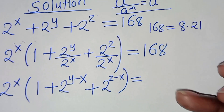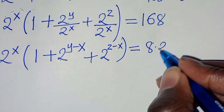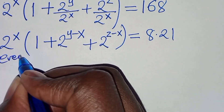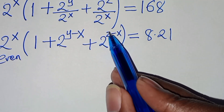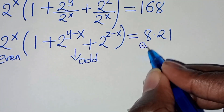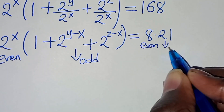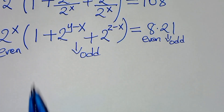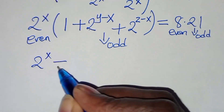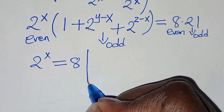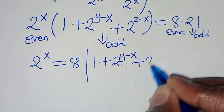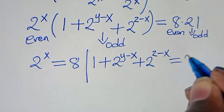So here we have 8 times 21. Now let's make a comparison. On the left-hand side, 2 to the power of x is even, and the bracket 1 plus 2^(y−x) plus 2^(z−x) is odd. On the right-hand side, 8 is even and 21 is odd. Comparing, we have 2 to the power of x equals 8, and 1 plus 2 to the power of y minus x plus 2 to the power of z minus x equals 21.